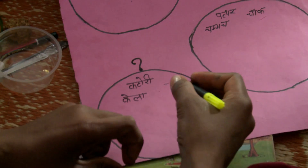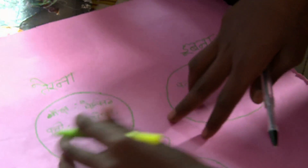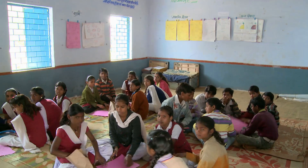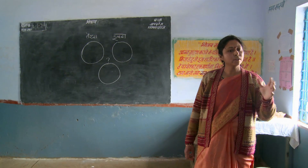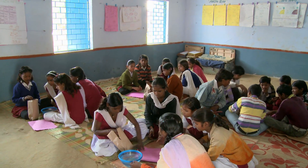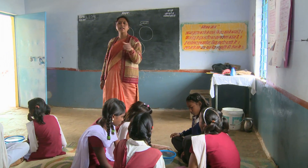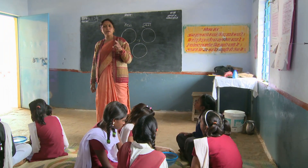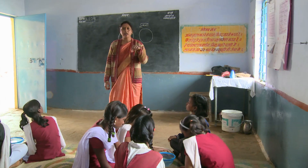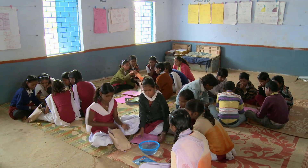Group work is a powerful form of active learning. After exchanging their ideas, the groups test their predictions. The teacher asks her students to place a tick or cross next to the items they listed, depending on whether they predicted correctly or not. She also asks them to explain in writing why the objects floated or sank.